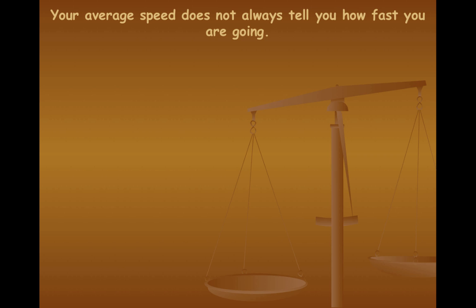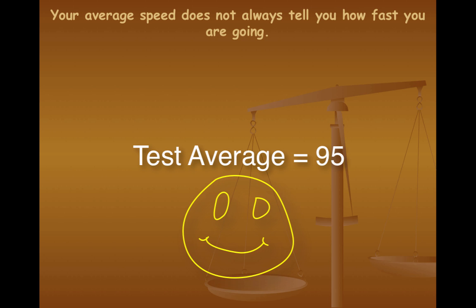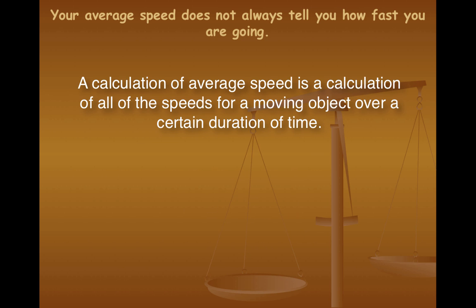And finally, you need to know that your average speed or your average velocity, for that matter, does not necessarily tell you how fast you're going. All the average speed equation does is it calculates exactly what it says. It calculates an average. So, for example, if you took a test and on one test you got 100 and on another test you got a 90, your test average for those two tests would be a 95. The average speed, average velocity equation does exactly the same thing. It calculates the average of speed.